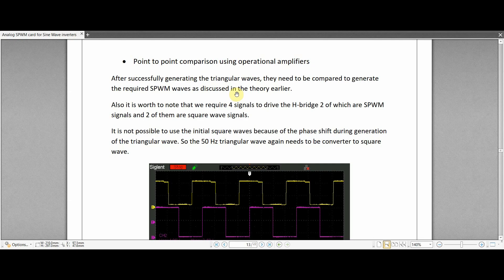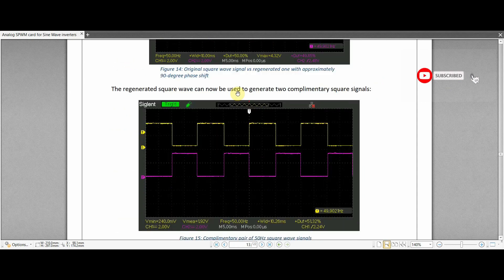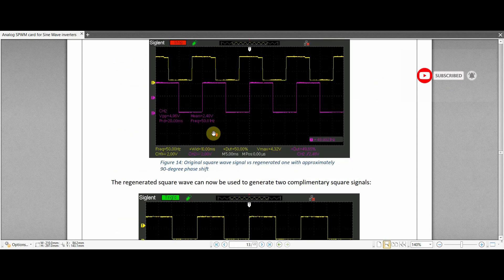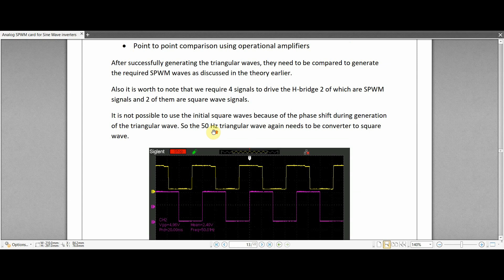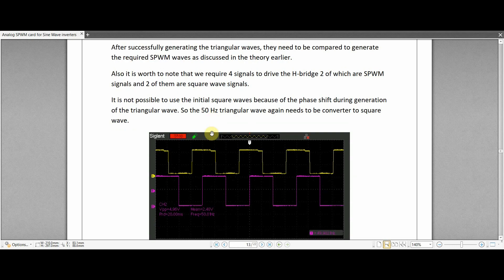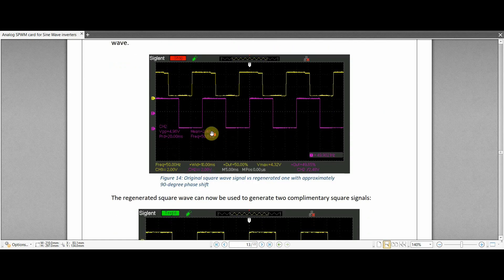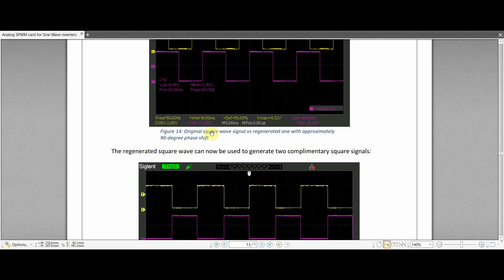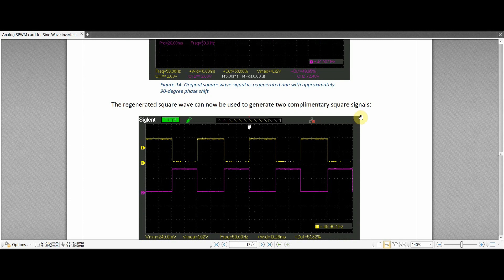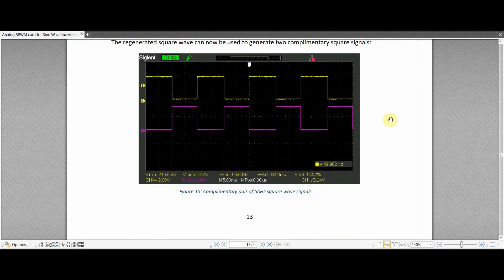Another point to keep in mind is that the 50 Hz signal generated from the 7490 cannot be directly used to generate the complementary pair of 50 Hz signal. The reason being simple: the initial 50 Hz that is being generated is passed to the low pass filter to generate the triangular waves. This also creates a phase shift of nearly 90 degrees as demonstrated in the figure here. So the triangular waves need to be compared again to create the square wave and then the complementary square waves can further be created using operational amplifiers.